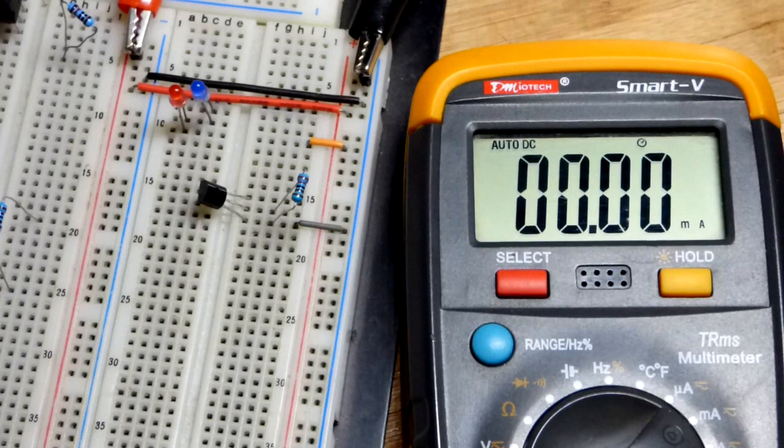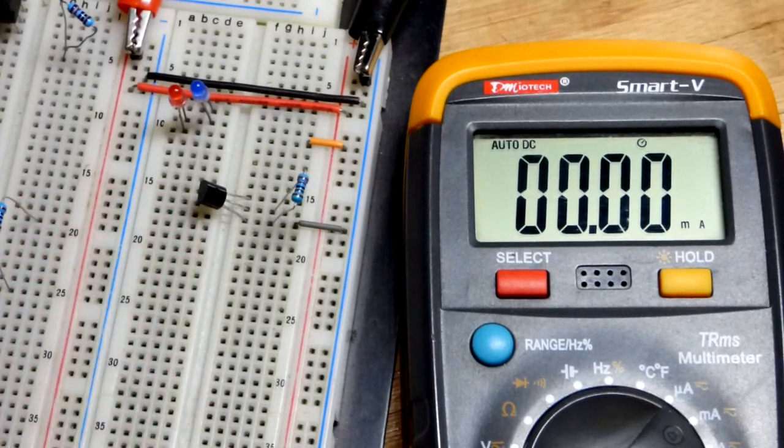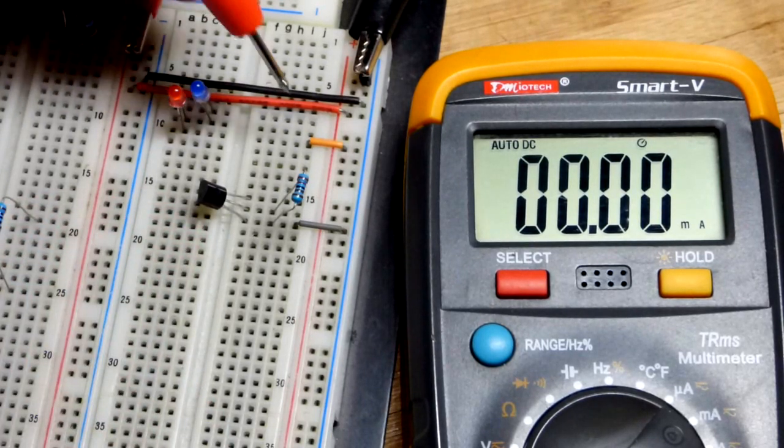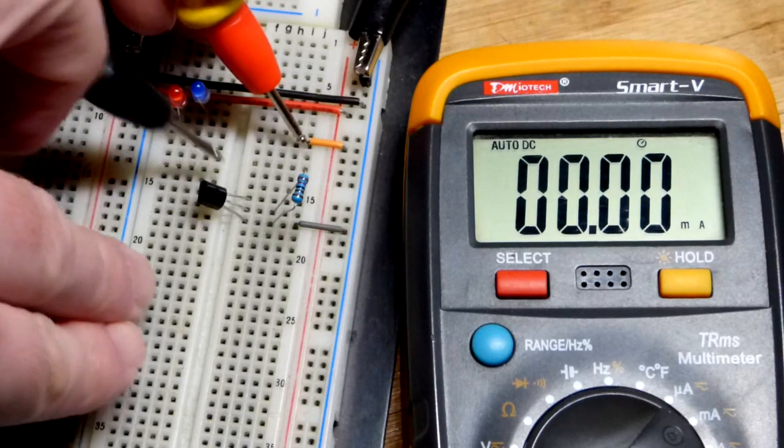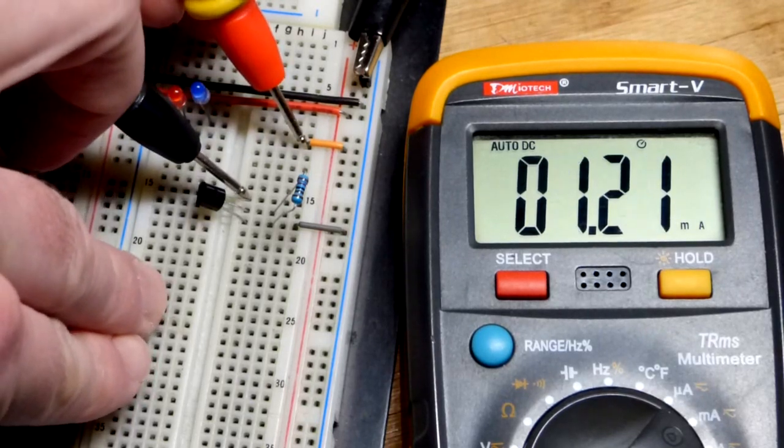So the way we have this wired up, JFETs make good current sources. Their limitations vary by the particular component you're using. We're using the J310.